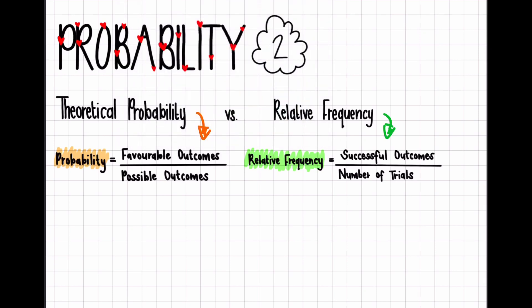So if we just look at a nice easy example — if we think about a dice, like in the previous video, we have six possible outcomes: one, two, three, four, five, and six. Those are the six different outcomes that the dice could land on.